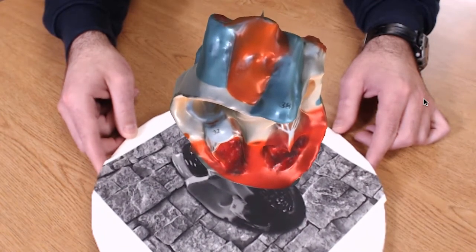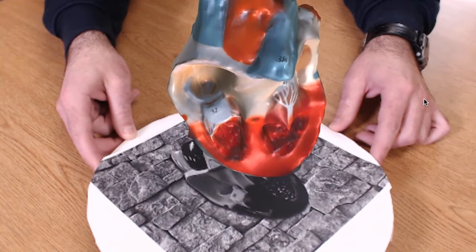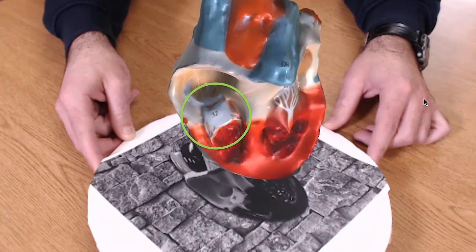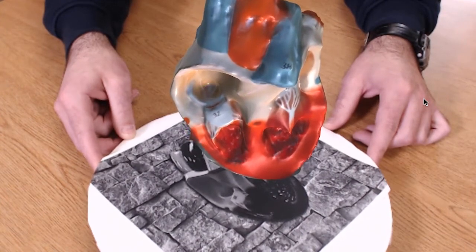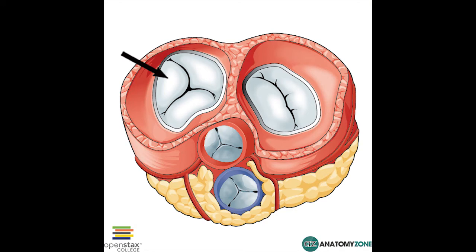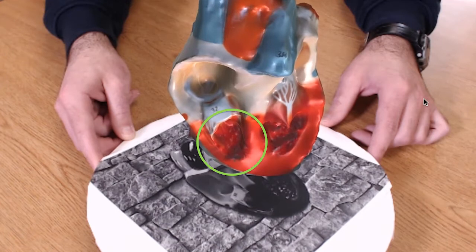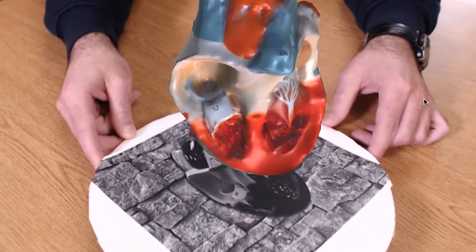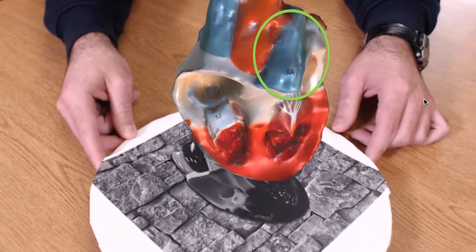Deoxygenated blood flows through the superior vena cava into the right atrium of the heart, which is the large, roundish, hollow space just below it. It then flows through the tricuspid valve — that whitish area just below the atrium. It's called the tricuspid valve because it has three flaps that open and close to allow blood to drain into the right ventricle, which is the reddish, more pointed space towards the bottom of the right-hand side of the heart.